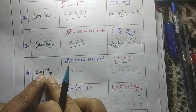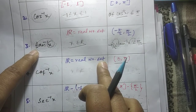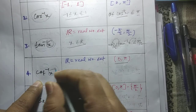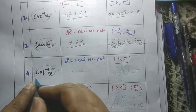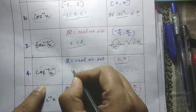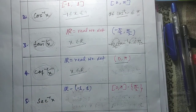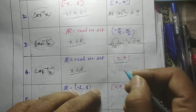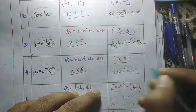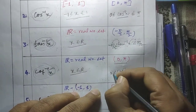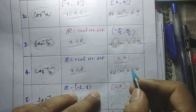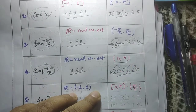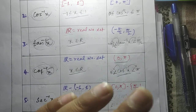Similarly, for cot inverse x, the domain is the real number set R, just like tan inverse x — for all real x, it will be valid. The range is the open interval (0, π) — meaning all values of cot inverse x will be lying between 0 and π. But it will never be equal to π, and it will never be equal to 0. It always lies strictly between 0 and π. That is the range of cot inverse x.